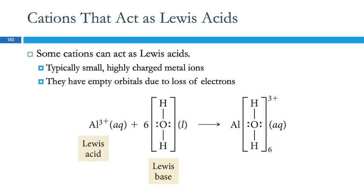Cations can act as Lewis acids. So we learned that small, highly charged metal ions like aluminum 3+ and iron 3+ can be acidic. So what happens here, they've got empty orbitals because they've lost all their valence electrons. So here the Lewis acid can accept electrons from the Lewis base.